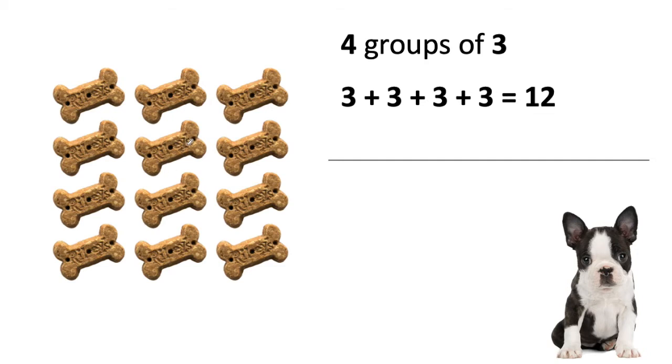I know that columns go up and down. So here I see one group. I see two groups. And I see three groups. And I see four in each group.